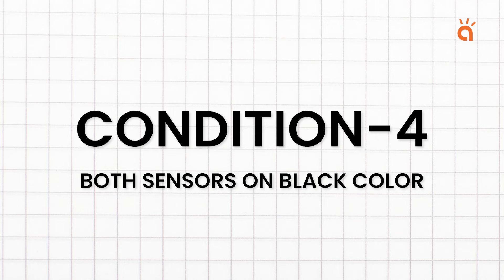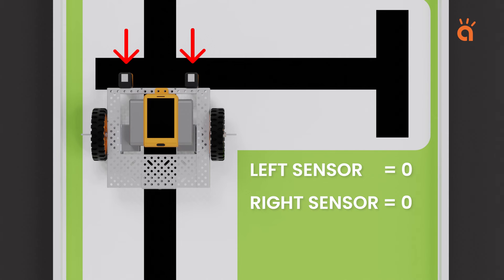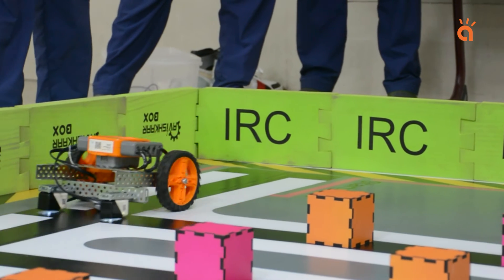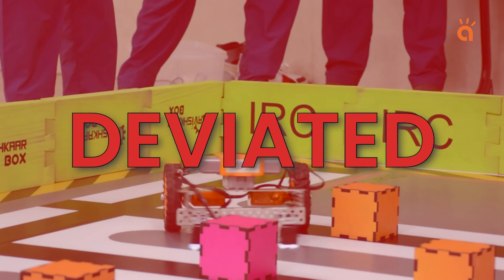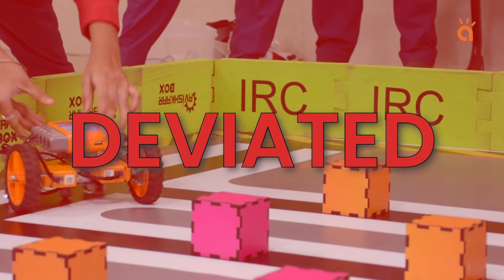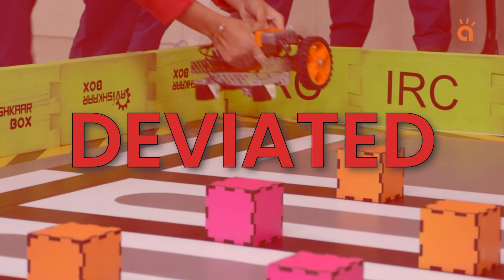Both sensors on black color. The robot is now facing straight and both the sensors are on black color intersection. This is the most important condition for a line follower robot. And in most cases, the line follower robot deviates after reaching this condition only. Let's understand this in detail.